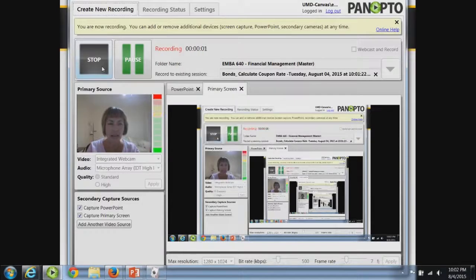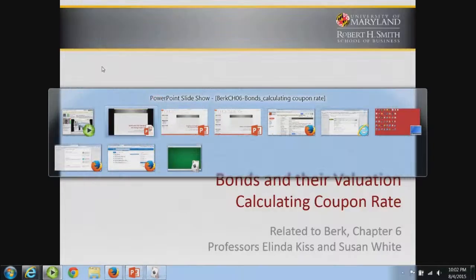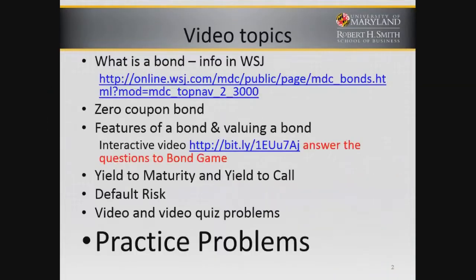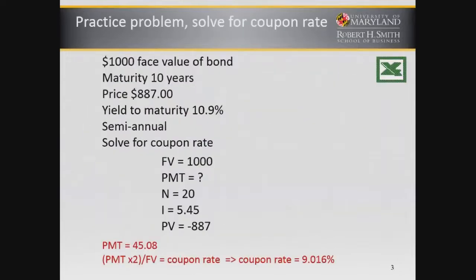We're going to calculate the coupon rate on a bond — one more practice problem. Let's assume that the bond has a face value of $1,000, a maturity of 10 years, and is currently selling at a price of $887, with a yield to maturity of 10.9%. This is semi-annual, and we're going to solve for the coupon rate.